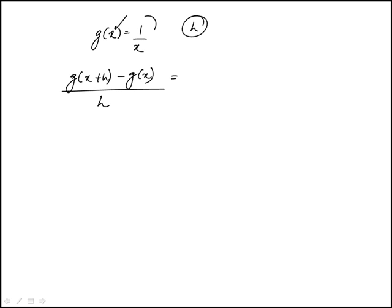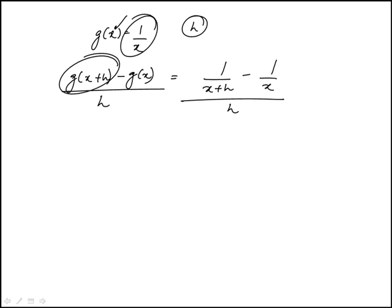So simply replace x plus h here. So this first piece is 1 over x plus h minus 1 over x over h. We just have to algebraically simplify this.